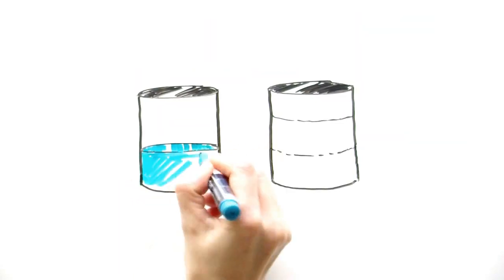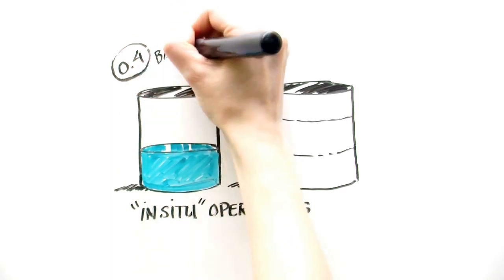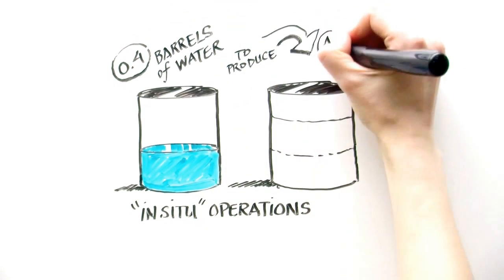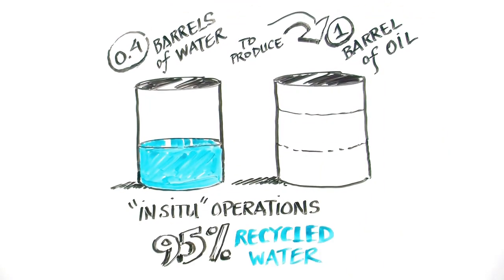In-situ operations use on average 0.4 barrels of water to produce one barrel of oil. About 95% of water used in in-situ operations is recycled water. Saline groundwater is used instead of fresh water in some in-situ operations.